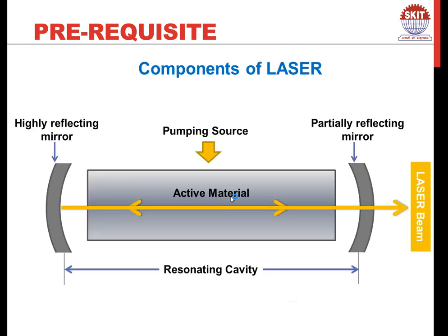Let us now start with the components of laser — this is still part of the prerequisite section. The components of laser, as shown here, include a highly reflecting mirror, a partially reflecting mirror, and the housing between these two mirrors which is known as the resonating cavity. An active material is kept between them, and there is also a pumping source.